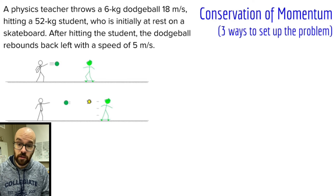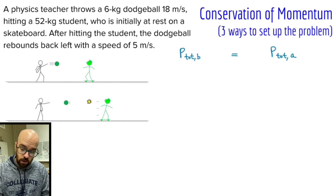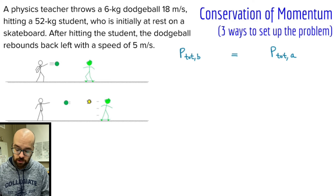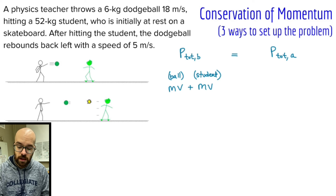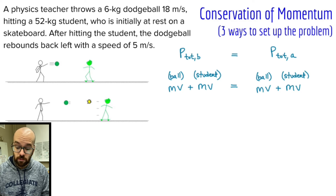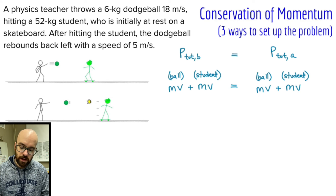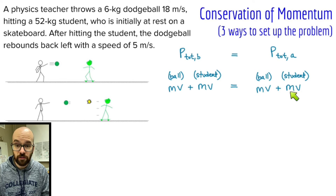The big idea is conservation of momentum: P total before equals P total after. Momentum is mass times velocity, so we write: mass times velocity of the ball before plus mass times velocity of the student before equals mass times velocity of the ball after plus mass times velocity of the student after. We have four different MV terms. It's important to stay organized: the first two are the ball and student before; the last two are the ball and student after.